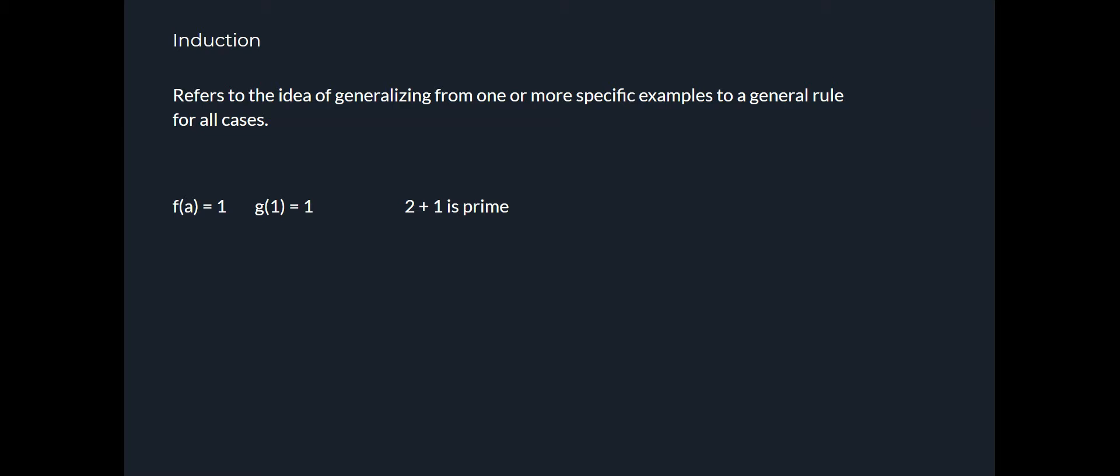Now, when we're doing mathematical things, we might come up with a number of specific examples. We might say, for example, that f(a) equals one, or g(1) is one, or that 2+1 is prime. All of these are observations, mathematical kinds of observations that you might make about the world that you're working in.